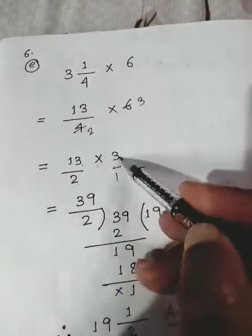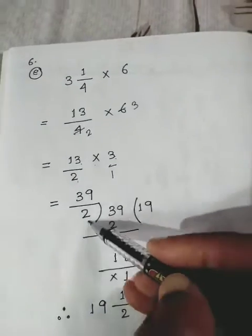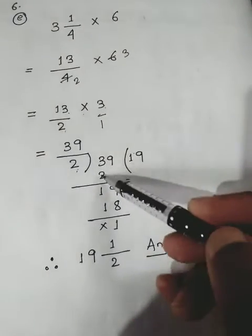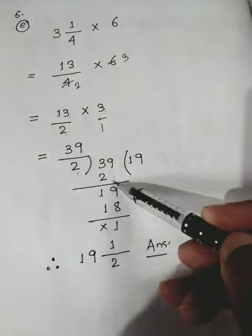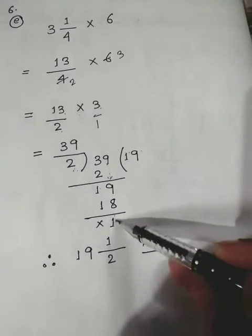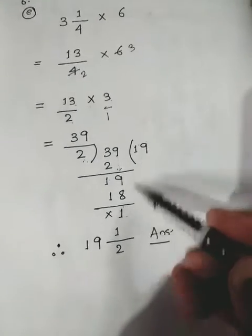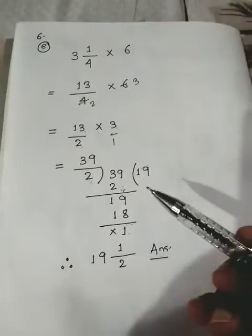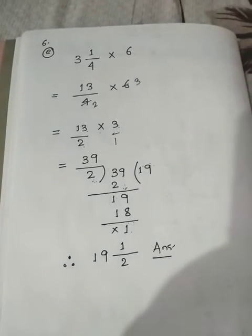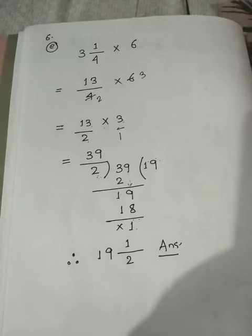After reducing, it becomes 13/2 × 3. Multiply: 13 × 3 = 39, 2 × 1 = 2. Divide 39 by 2: 2 × 19 = 38, remainder is 1. So the final answer is 19 1/2. This is exactly how you perform question number 6.